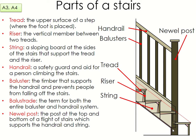The tread is the upper surface of a step — basically the part where your foot is placed. The riser is the part that goes from one step to another, joining them together. Some steps might not have a riser, which means there's a big gap between the steps. The riser is the vertical member between the two treads. So the tread is the part you step on, and the riser rises between them to join them together.